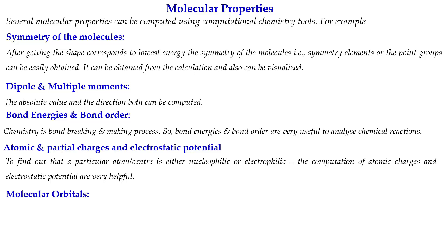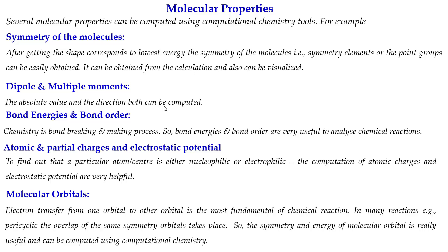Next are molecular orbitals. When we solve the Schrödinger equation, we get the energy levels of the molecule, which are expressed as molecular orbitals. Molecular orbitals are extremely useful for understanding many chemical reactions, because electronic transitions happen from one molecular orbital to another. In many reactions — like pericyclic reactions — symmetry plays a role, and you can understand which way a reaction will proceed by observing the molecular orbital and its symmetry.